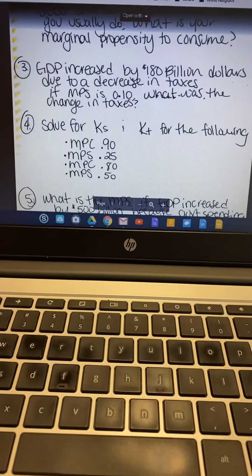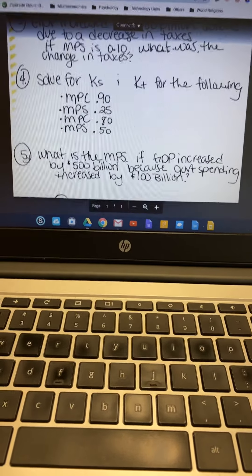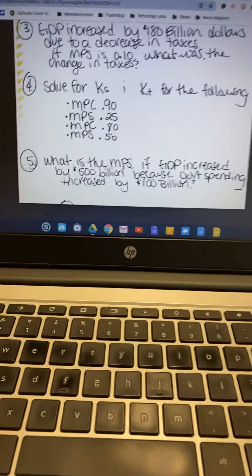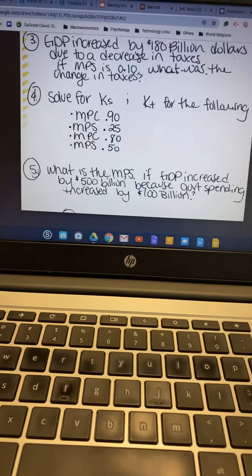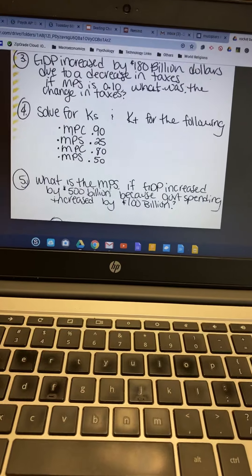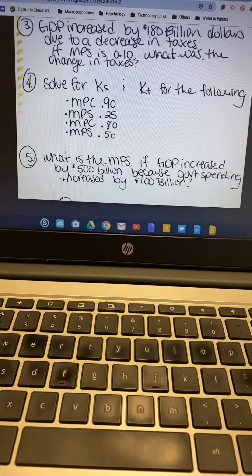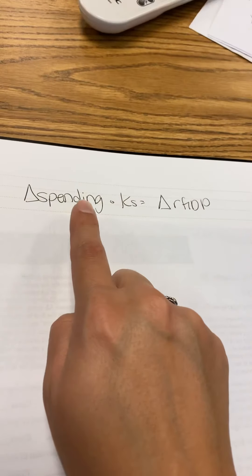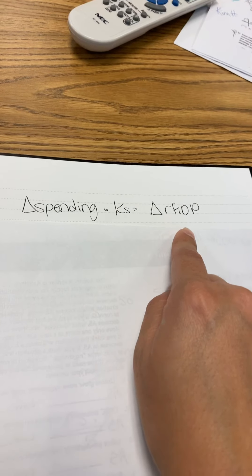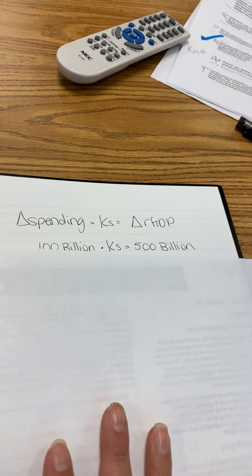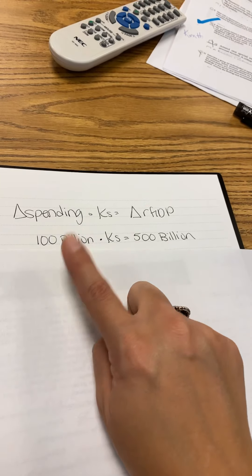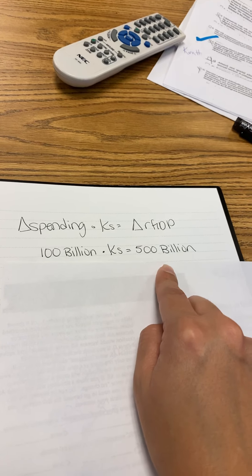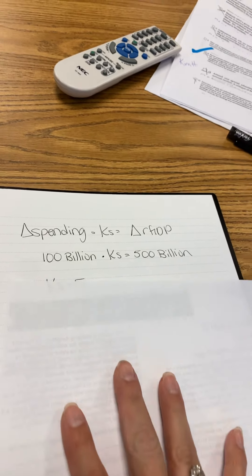And the last question says, what is the MPS if GDP increased by $500 billion because government spending increases by $100 billion? It's still going to be the equation of spending times the spending multiplier gives us GDP. Because they talk about change of spending and change in GDP. This time, they gave us the two ends. They gave us the change of spending, $100 billion, and the change of GDP, $500 billion. So something times $100 billion gives us $500 billion. So KS must equal 5.